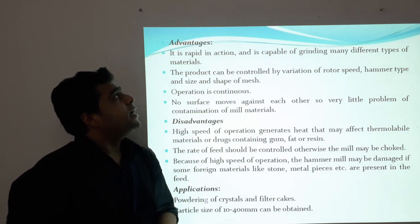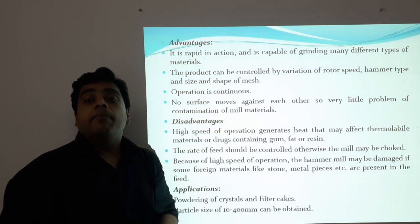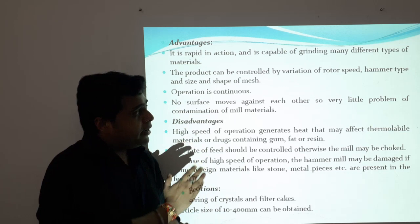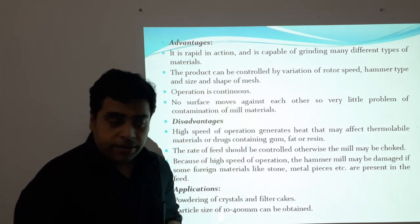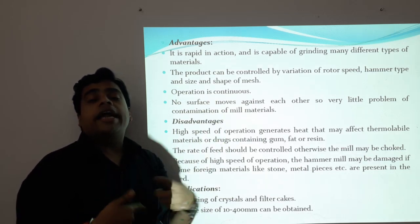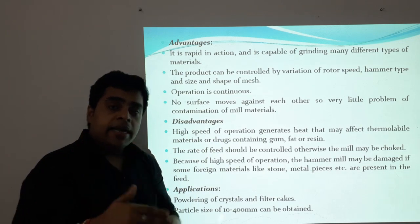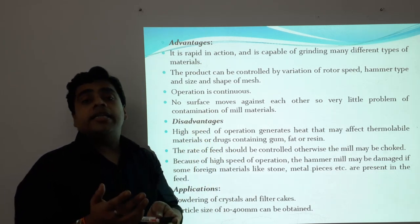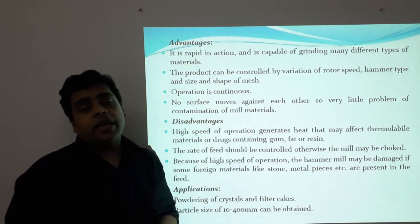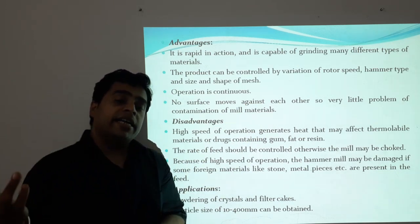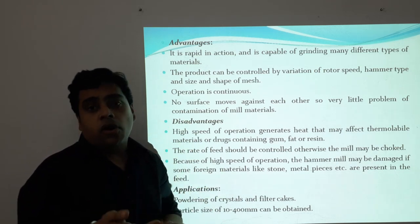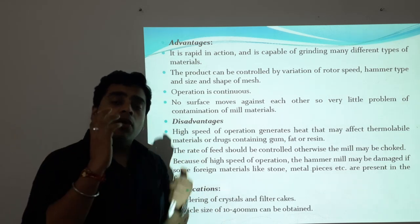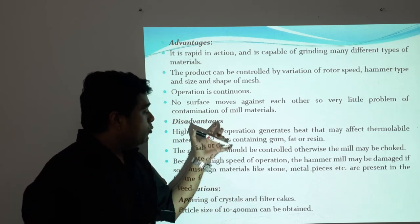The advantages of hammer mill: it is rapid in action and capable of grinding many different types of material. The product can be controlled by variation of rotor speed, hammer type, hammer size, and the shape of the mesh screen. The operation is continuous — feed is added continuously, the rotor rotates, hammers give impact, and size reduction continuously occurs. No surfaces move against each other, so very little problem of contamination of the mill materials occurs.